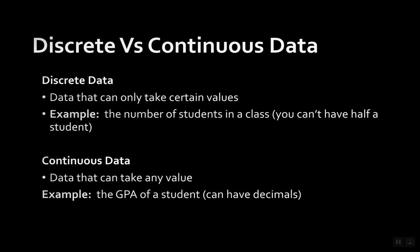Next, discrete versus continuous data. Discrete data is data that can take only certain values, compared to continuous data which could be any number — from one to a gazillion. Continuous data could be decimal or whole numbers. Discrete data has to be whole numbers only, for example the number of students in a class — you can't have half a student.